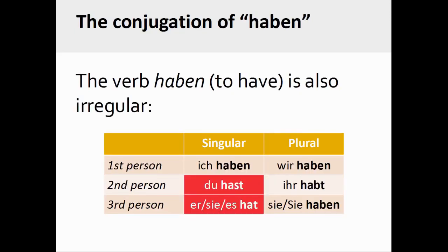For the verb haben, or 'to have,' the B is removed from the end of the verb root in the second and third person singular: ich habe, du hast, er/sie/es hat, wir haben, ihr habt, sie haben.